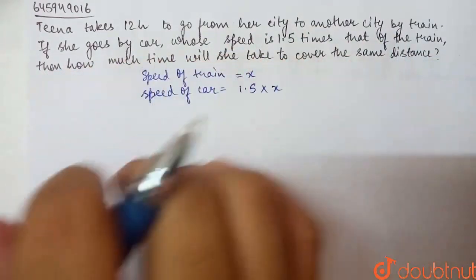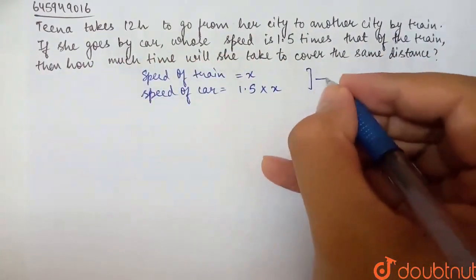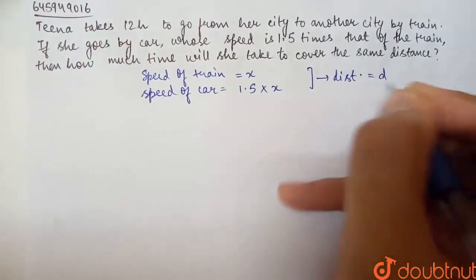Then how much time will she take to cover the same distance? We have distance here. Between both cities, distance is equal to D.